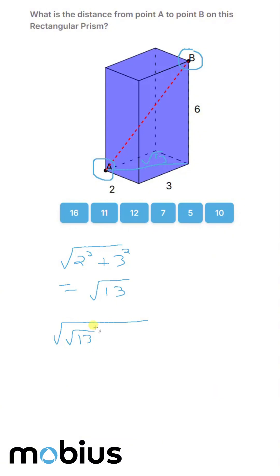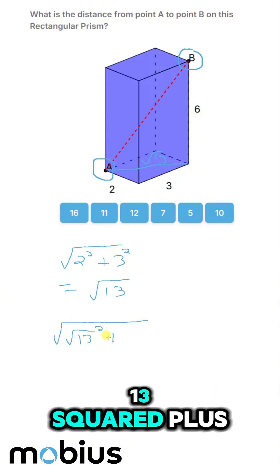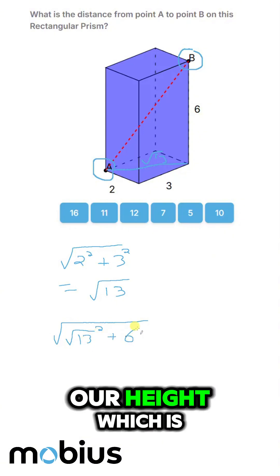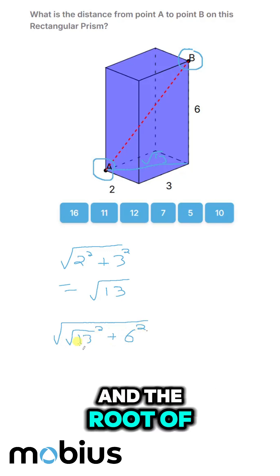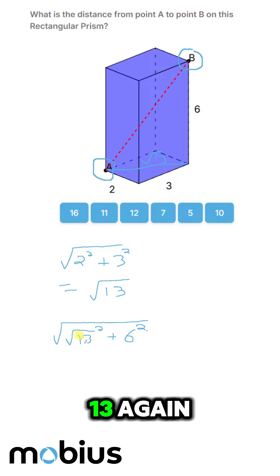We've got the square root of root 13 squared plus our height, which is 6 squared. And the root of 13 squared is just 13 again.